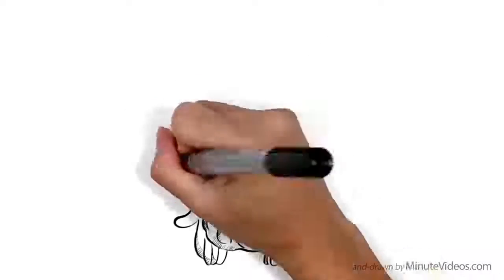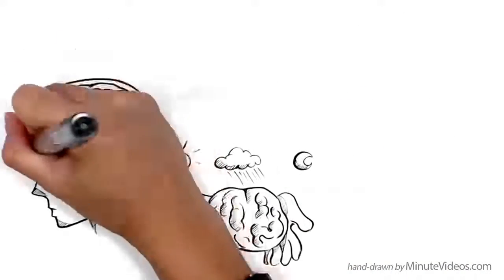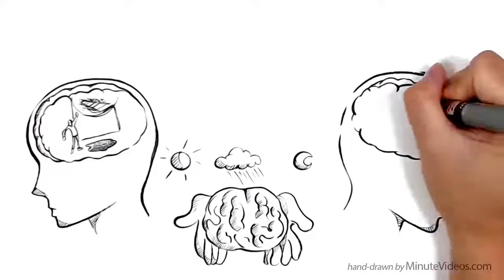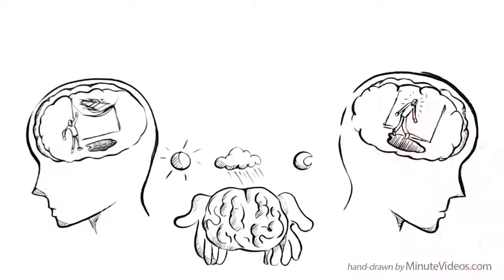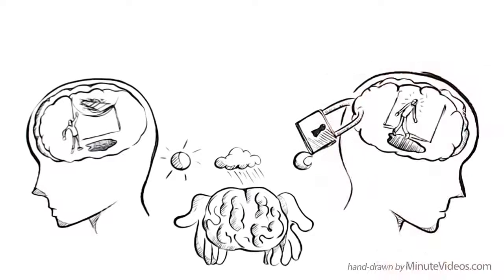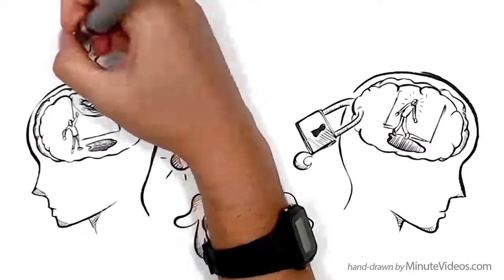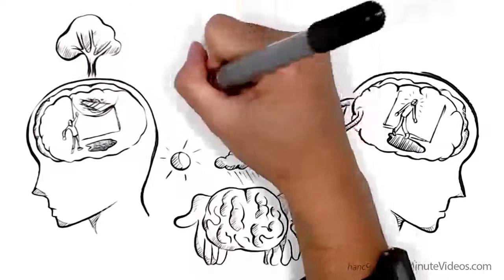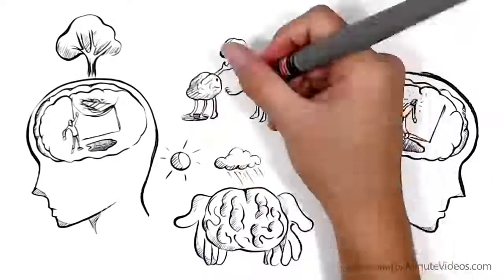There are two types of mindset we can cultivate. One that embraces problems as opportunities to learn, and one that avoids them, often out of fear to fail. People that avoid conflicts can be described as having a fixed mindset. Those who see problems as interesting challenges have a growth mindset. Sometimes we like to switch from one to the other.